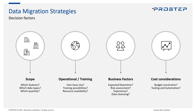Now let's look at decision factors for choosing a migration strategy. The first is understanding the scope: which systems and data types need to be migrated, the quantity, how to export and import the data, and the overall time required. This drives whether Big Bang is even feasible — if migration simply takes too long, you need to go incremental.